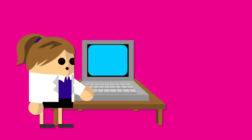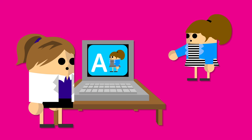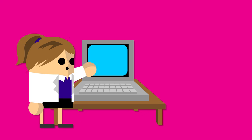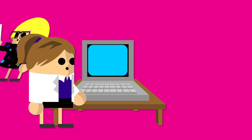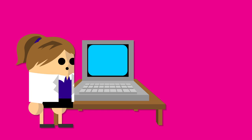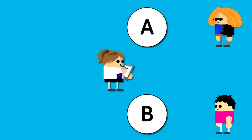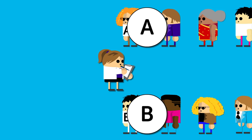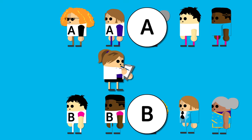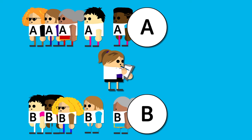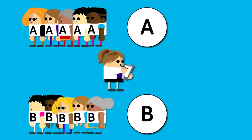So, to prevent bias, Dr Brown puts the details of those taking part into a special computer program, and that randomly allocates them to either Treatment A or Treatment B. This means that the people taking part in the trial have treatments that are suitable for them, and that will help the doctor to find out if the new treatment works better than the current one.